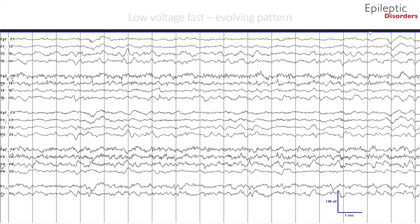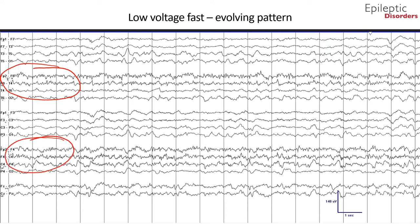In the second page of the seizure shown in bipolar montage, you can see in the beginning of the epoch over the right frontal region the same evolving pattern of low-voltage fast frequency activity. In the fourth second of the page, outlined by the green circle, are well-defined phase reversals and epileptiform discharges, which initially in the epoch occur as quasi-periodic discharges.